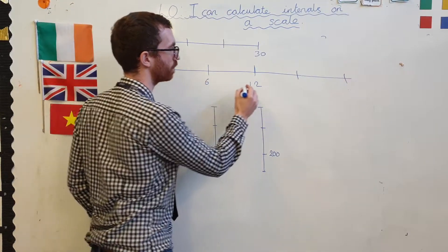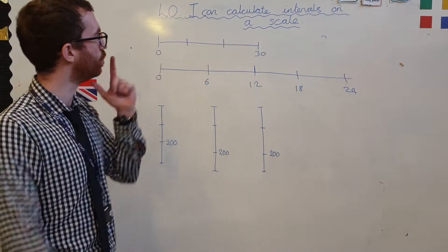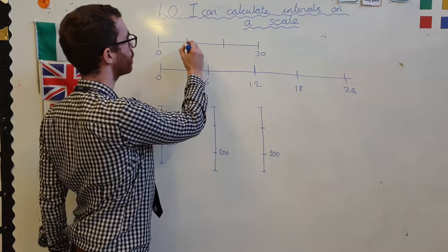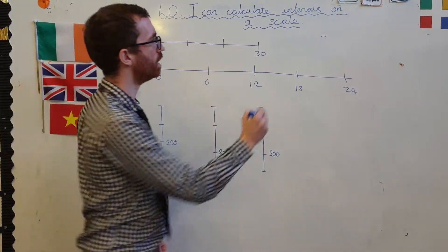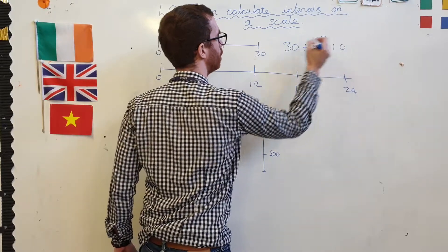0, 6, 12, 18, 24. Nice one. What about this one? Now, it's not got a halfway point, but there are 1, 2, 3 points on it. What is 30 divided by 3 equals 10?